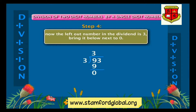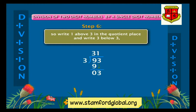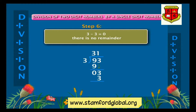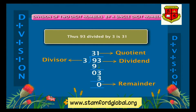The left-out number in the dividend is three. Bring it down next to zero. Recite the three times table again: three into one is equal to three, so three goes into three one time. Write one above three in the quotient place and write three below three. Three minus three is equal to zero, there is no remainder. The dividend is ninety-three, the divisor is three, and the quotient is thirty-one. Thus ninety-three divided by three is thirty-one.